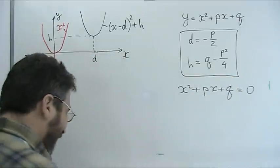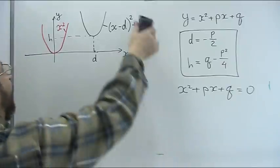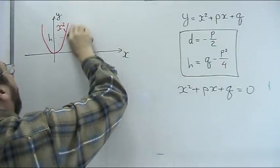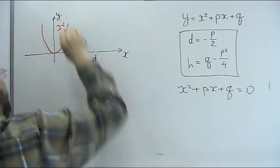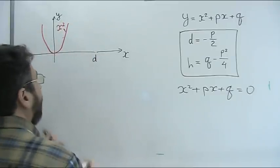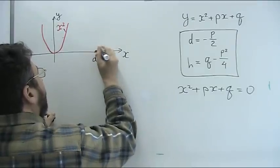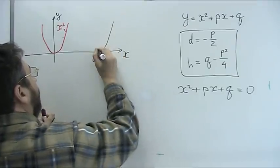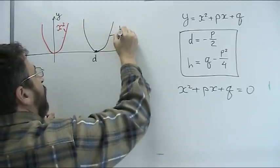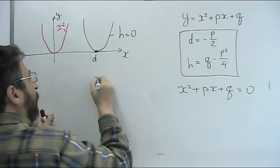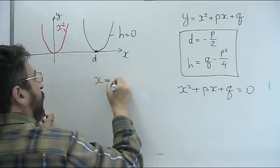In the case when h equals 0, my quadratic parabola will touch x axis at the point d. This is case h = 0. And my equation will have the only root x = d.